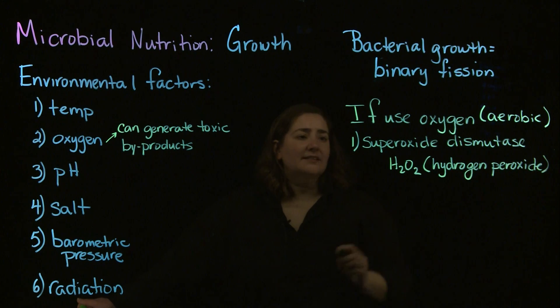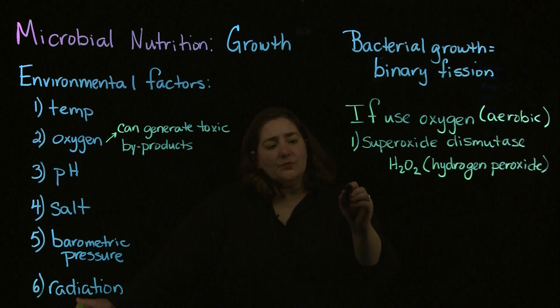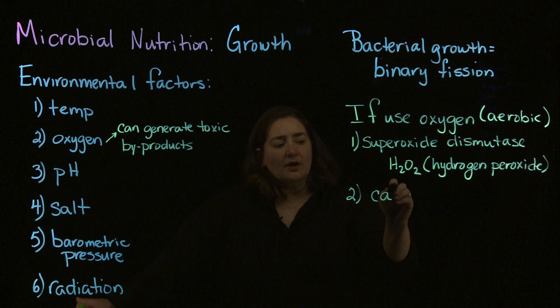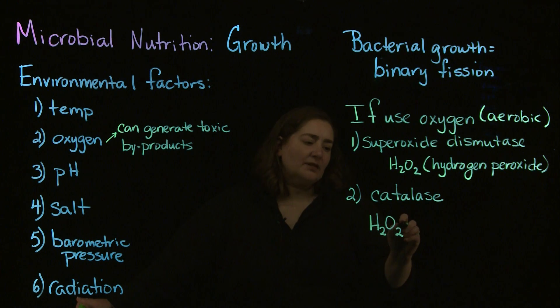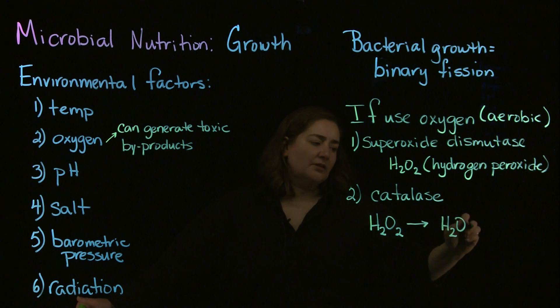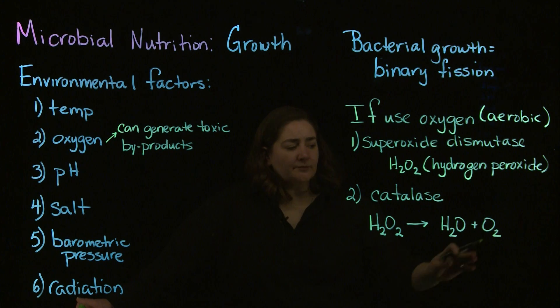Hydrogen peroxide is not good for cells and needs to be broken down. The enzyme that breaks down hydrogen peroxide is catalase. Catalase takes hydrogen peroxide and breaks it down into harmless products: water and elemental oxygen.